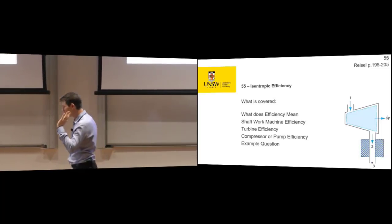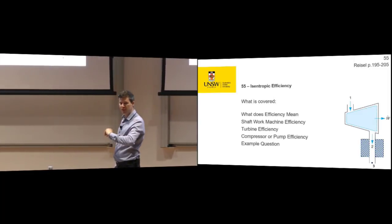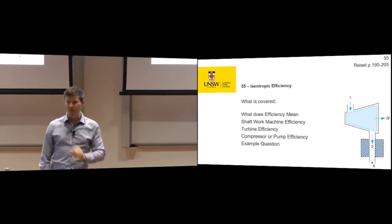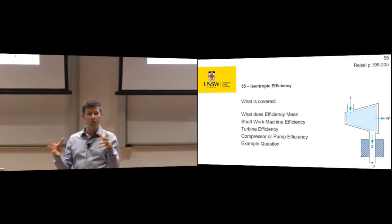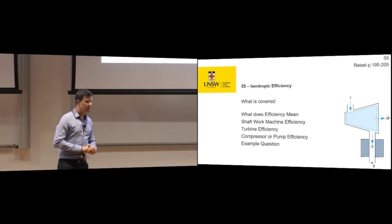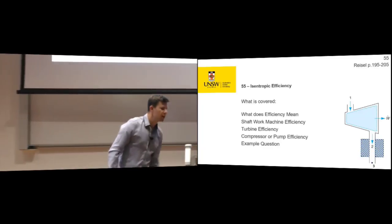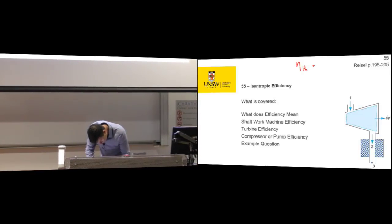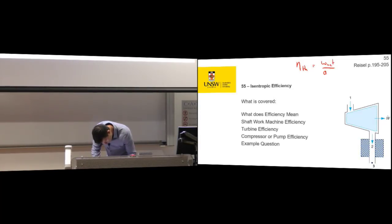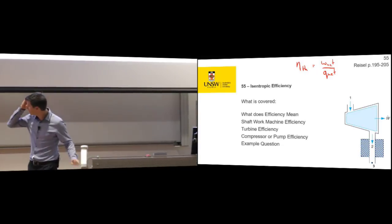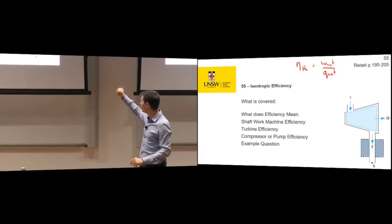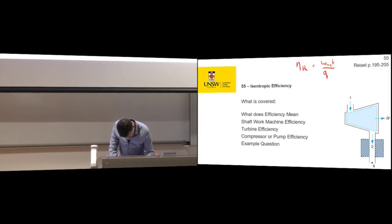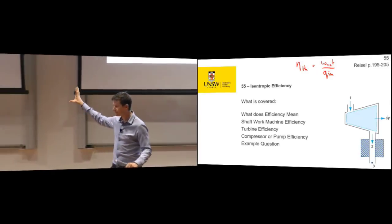The thermal efficiency of this Otto cycle is 45 percent — but that's a different thing. How do we define thermal efficiency? Desired output divided by the energy required to make it happen. For a heat engine, thermal efficiency is work net divided by Q in. Work net equals Q net for a closed cycle.